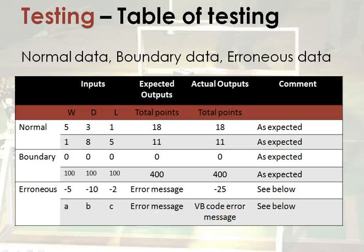And then we come on to some testing. Here's a little table. Testing should really be far more thorough than this, but this does do some testing with normal data, boundary data and erroneous data. Normal being what you would expect to be put into the system. Boundary being like pushing it to the edges of what you expect — arguably 100 is not really pushing it to the boundary, it should be in the thousands. This is not perfect or thorough testing by any means. The erroneous testing that's been done here does bring up a couple of issues, which are talked about in the next slide.